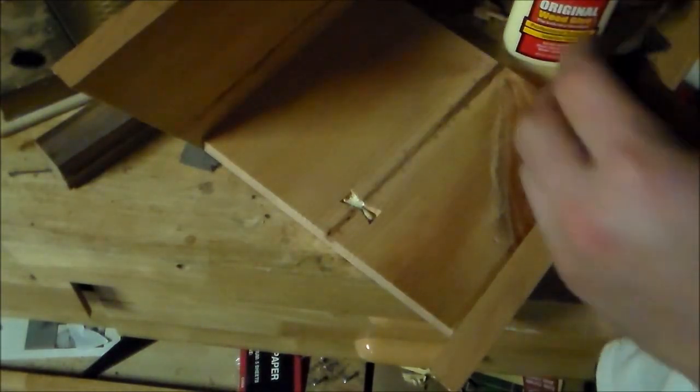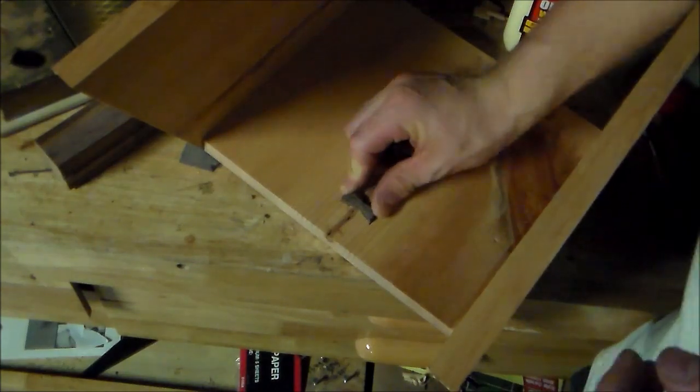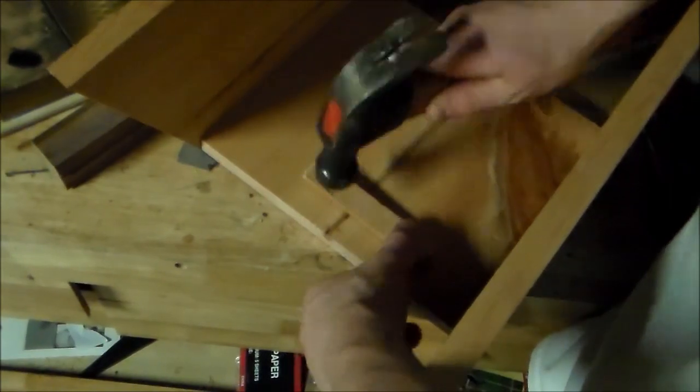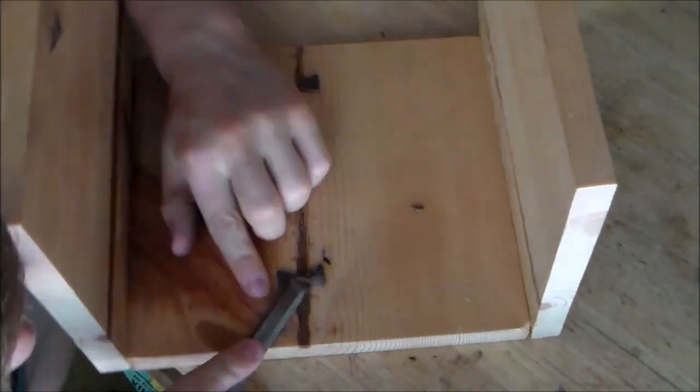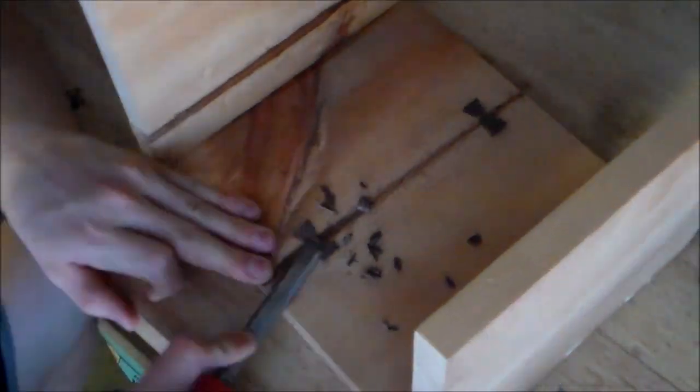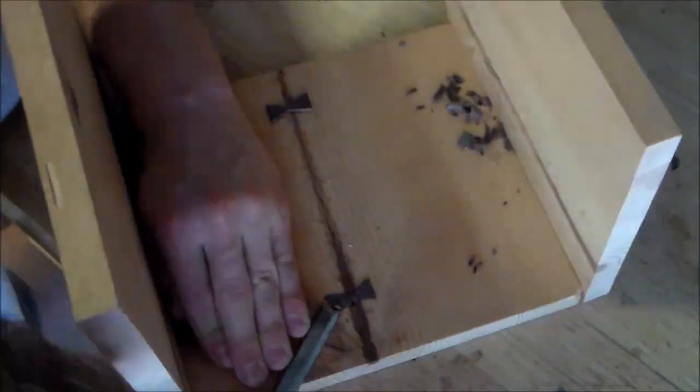Now, free wood is not always the best quality wood, and this board had a big old crack running down the middle of it. So I stuck a butterfly or a bowtie in there, and that's going to make it look nice, but no one's going to see it since it's on the inside. But most importantly, it'll help keep that board from splitting all the way and cracking in half.